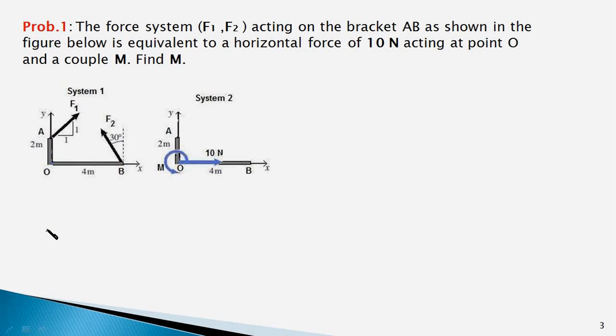The first condition is that the vectorial sum of the two forces F1 and F2 is equal to the vectorial sum of the forces in system 2, but in system 2 we just have a single force. So it will be equal to 10 newtons. Since the forces F1 and F2 are in xy plane, we can use the scalar equations. The first scalar equation for the x direction is given here.